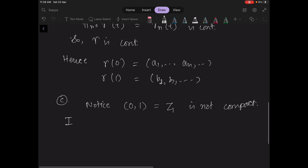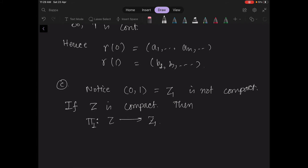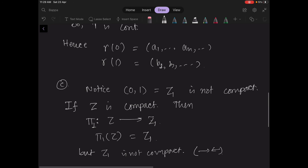Now if z is compact, then pi image from z to pi 1, projection on the first coordinate, this is a continuous map. Then pi 1 of z equals z1 would also be compact. But z1 is not compact. Hence a contradiction. So option C is wrong.